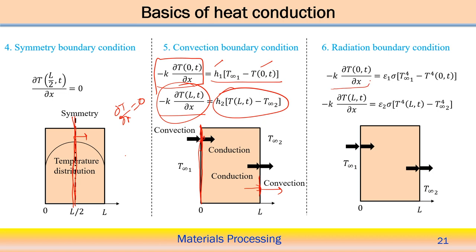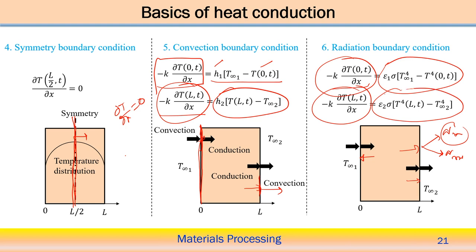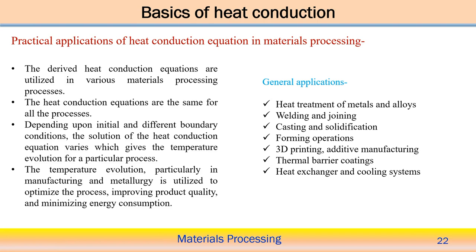In practical problems, what is conducted to the surface must balance both convection and radiation losses: heat conducted = convection loss + radiation loss. If convection is neglected, only radiation remains, and the energy balance at the surface must be maintained — heat conducted to the surface equals heat lost by radiation. These types of boundary conditions are necessary to define depending upon the problem itself. Now let us look into the practical application of the heat conduction equation in material processing.